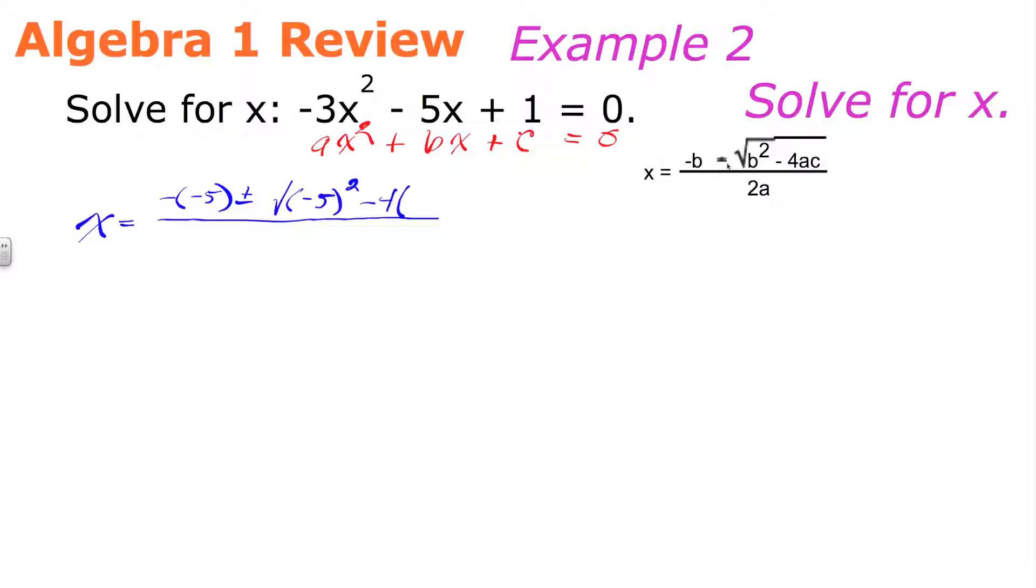Minus 4 × a, in this case a is -3, times c, in this case c is a positive 1. So, this is what goes underneath the square root, or underneath the radical. And in the denominator, 2 × a, so 2 × -3. Again, that 3 is that a there. Now, it's time to simplify this.